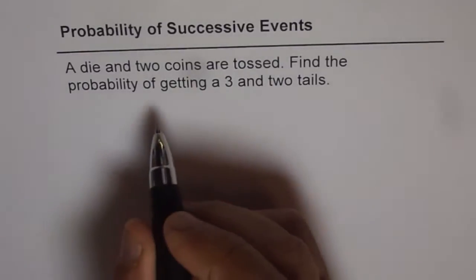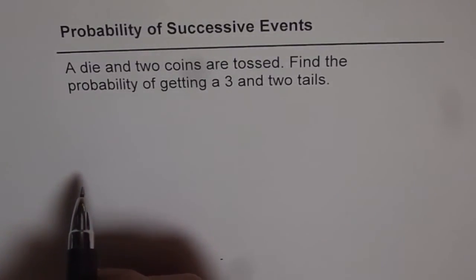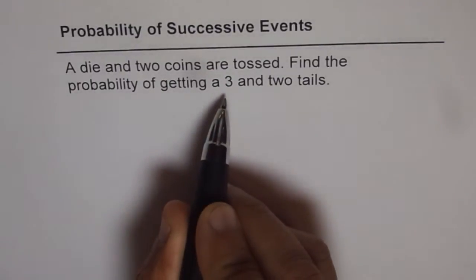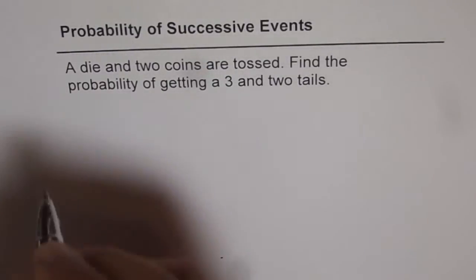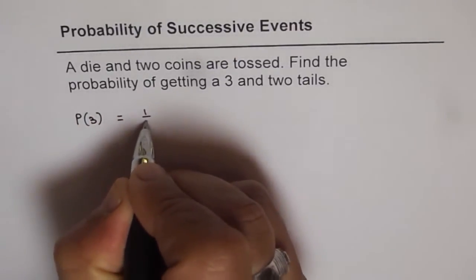Now in case of a die there are six possible outcomes which are equally likely, and to get a number 3 is one out of six. So probability of getting 3 is 1/6.